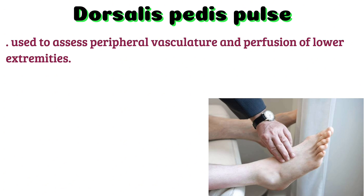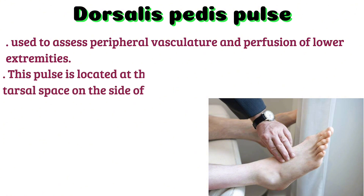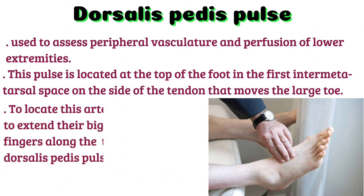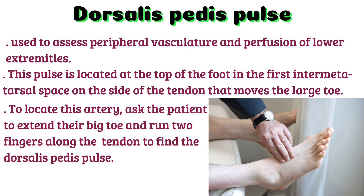Dorsalis pedis pulse: this pulse can also be used to assess peripheral vasculature and perfusion of the lower extremities. This pulse is located at the top of the foot in the first inter-metatarsal space, on the side of the tendon that moves the large toe. To locate this artery, ask the patient to extend their big toe and run two fingers along the tendon to find the dorsalis pedis pulse.